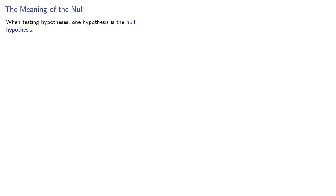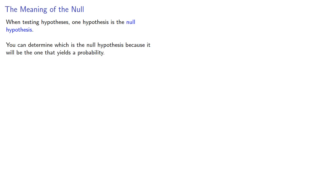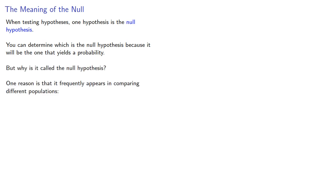When testing hypotheses, one hypothesis is the null hypothesis. You can determine which is the null hypothesis because it will be the one that yields a probability. But why is it called the null hypothesis? One reason is that it frequently appears in comparing different populations — the null hypothesis is that there is no difference between the two populations.